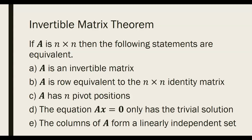The big takeaway from section 2.3 is the Invertible Matrix Theorem. It ties together everything about invertible matrices with what we learned in chapter 1. If A is an n by n square matrix, then the following statements are all equivalent. First, A is invertible — and we learned last time that when you put an invertible matrix in row-reduced echelon form, it gives you the identity matrix.